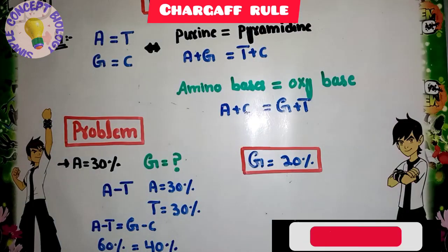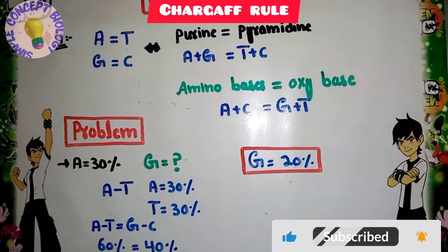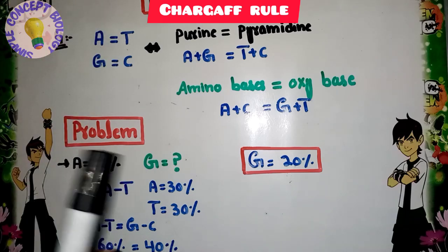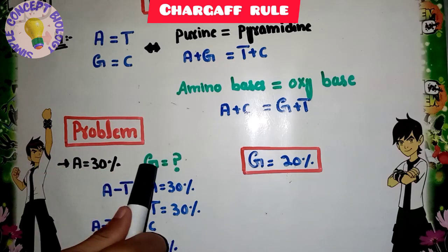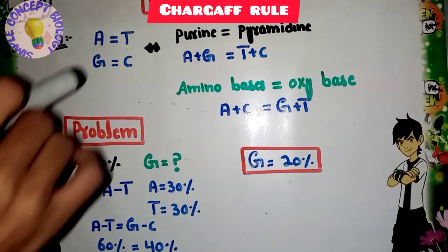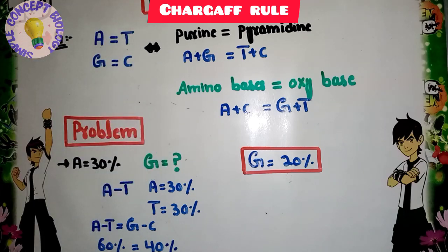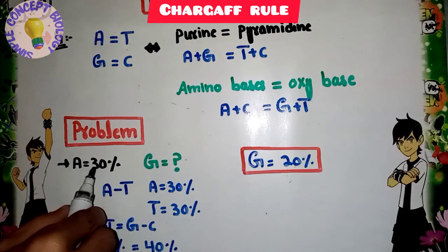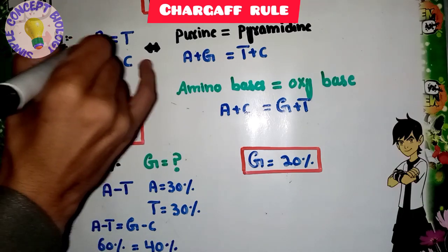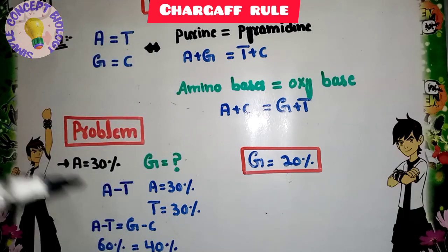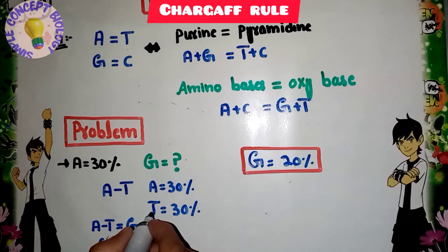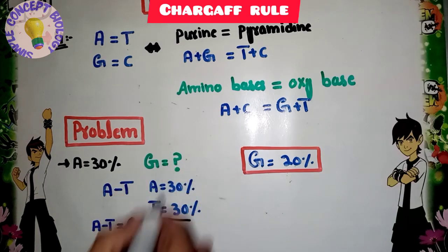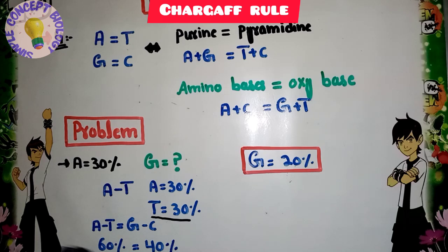Now we will discuss a problem related to Chargaff's rule. If a DNA sample has an adenine concentration of 30%, what will be the concentration of guanine? From Chargaff's rule, adenine equals thymine, so the concentration of thymine is also 30%.